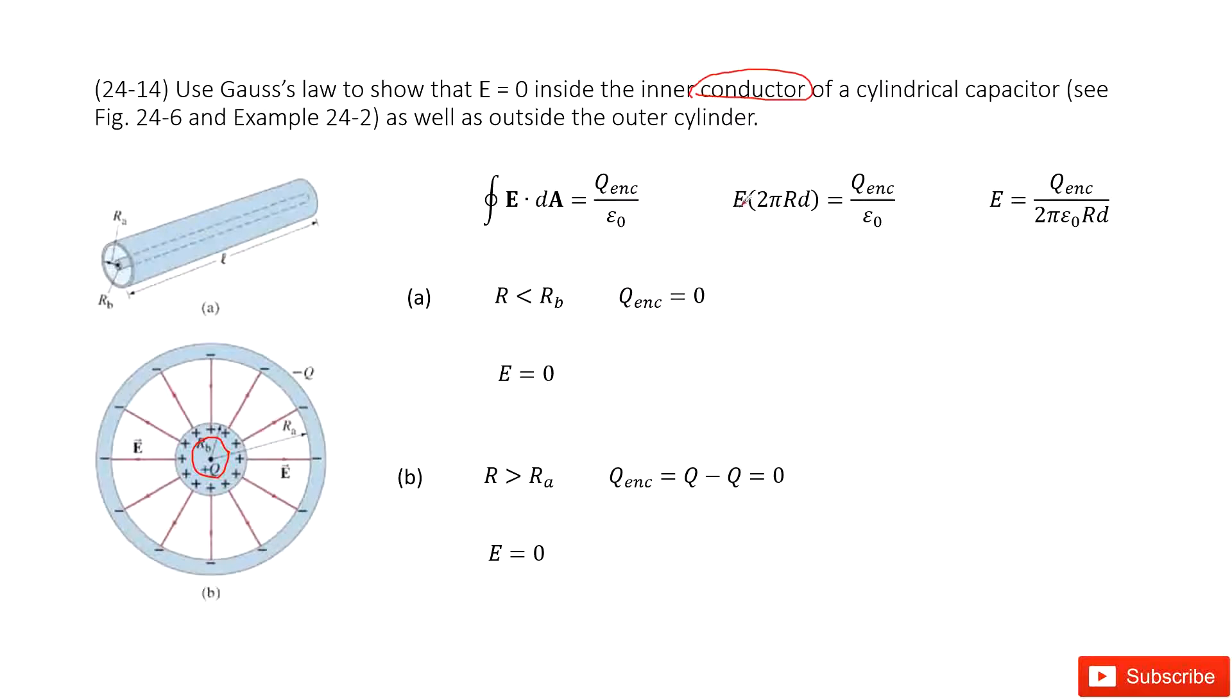So in this case, we can write it as E times the Gaussian surface 2πr times d. And then, E equals the Q enclosed divided by epsilon naught.